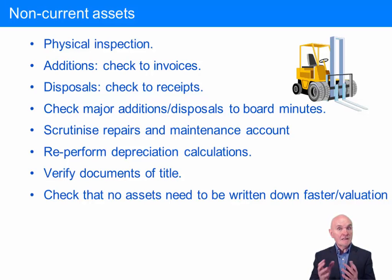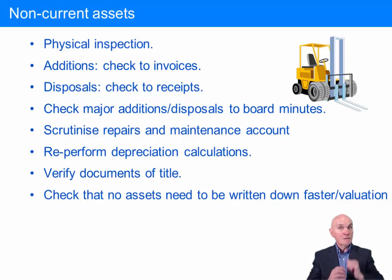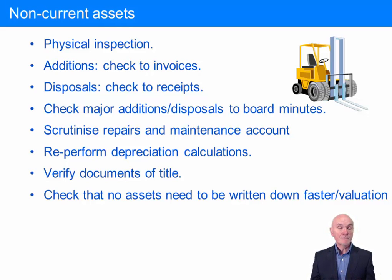It's very easy to get these mixed up. You don't want items which should have been capitalised written off to repairs and maintenance. This might be done deliberately — to keep the profit down and therefore keep the tax down. Sometimes it goes the other way: instead of writing off an expense which is a repair, people may prefer to treat it as an addition to non-current assets, because then it is not expensed and it will build the profit up if they want to show better results. Sometimes they simply get confused and don't know where to put it.